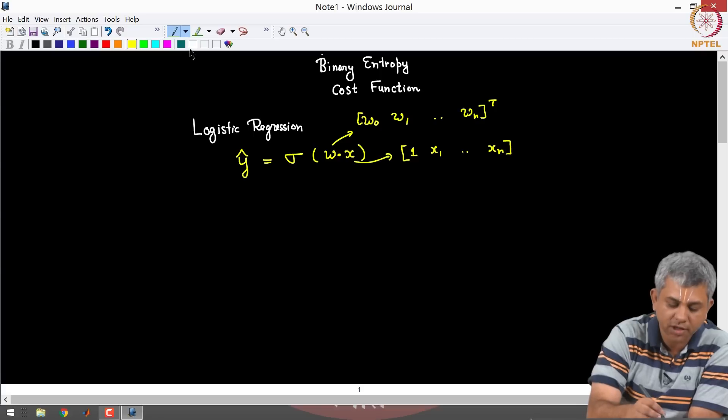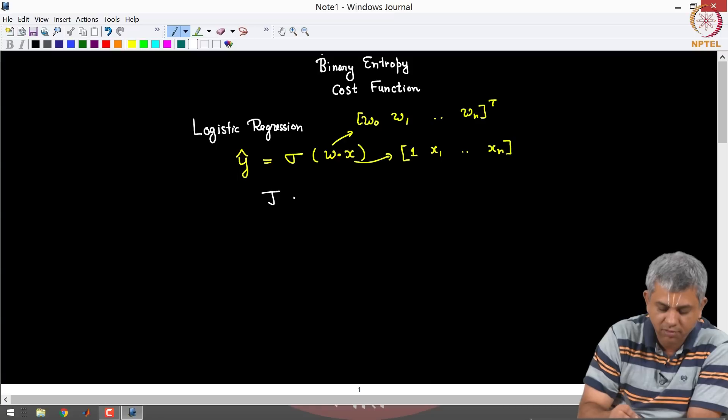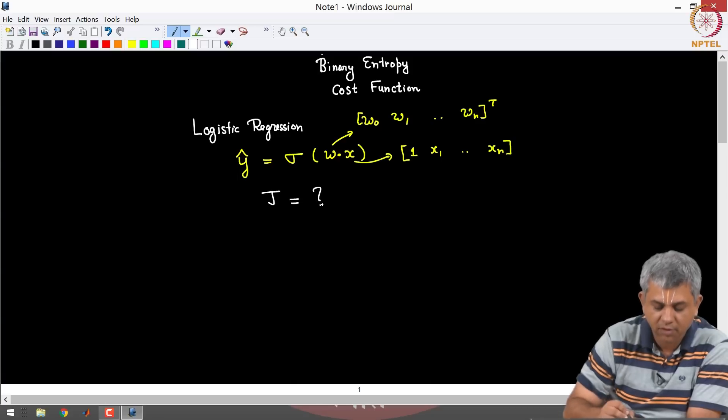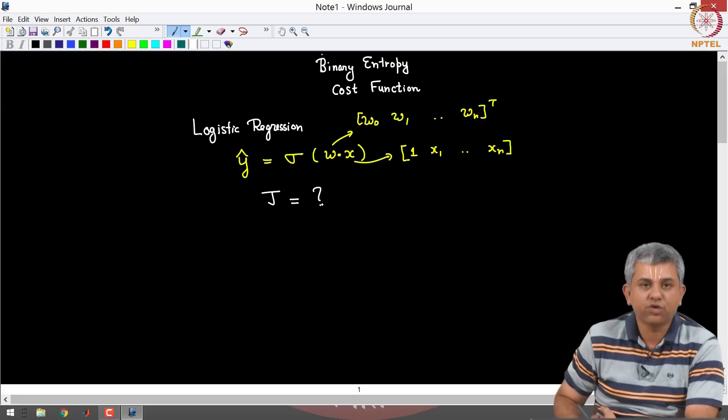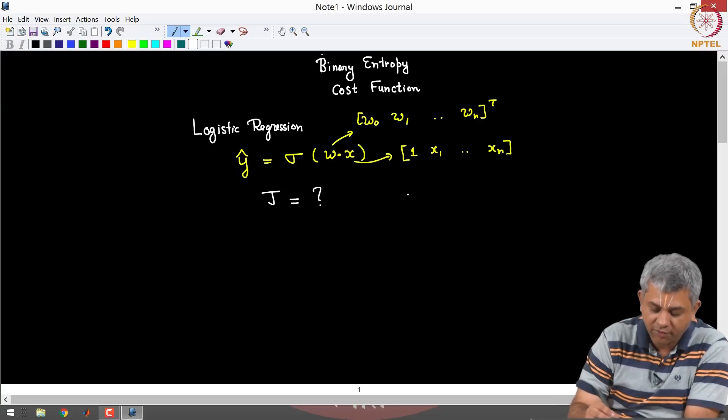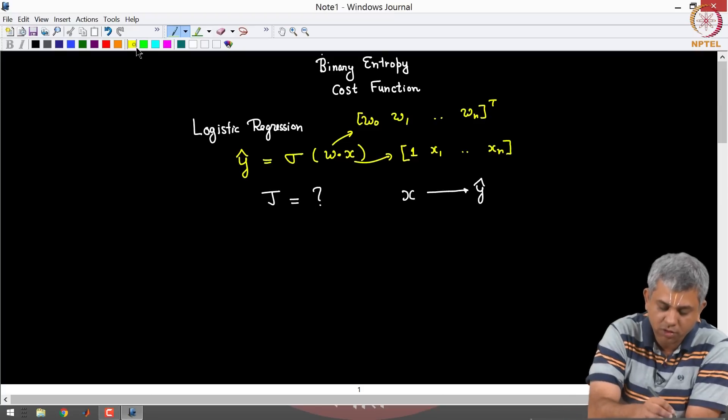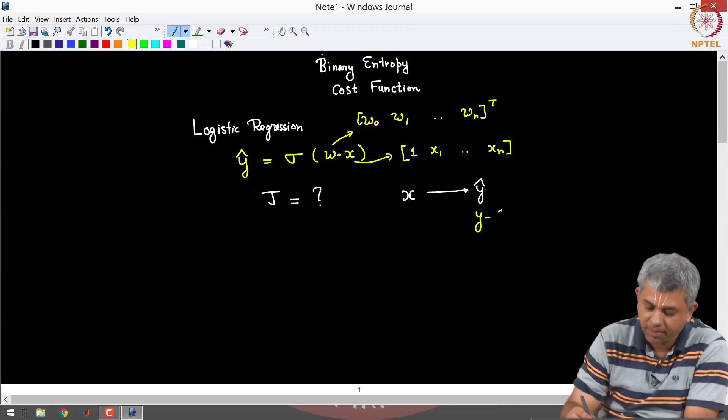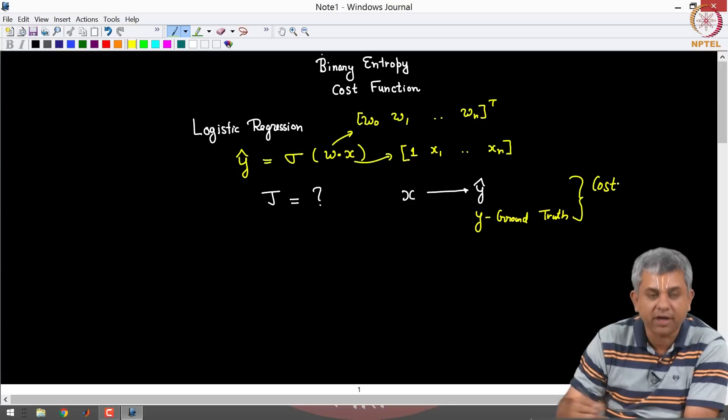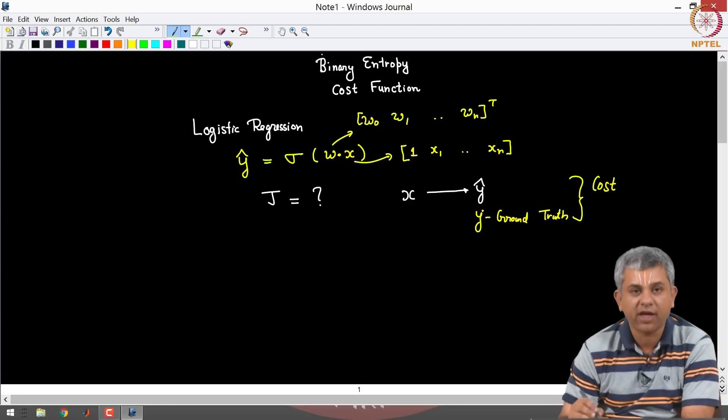Now the question is what is a good cost function for this. Remember in our usual learning paradigm what we have is this: I have an X, this predicts a Y hat, the ground truth is some Y, and I wish to find out some cost or penalty for Y hat and Y being different.